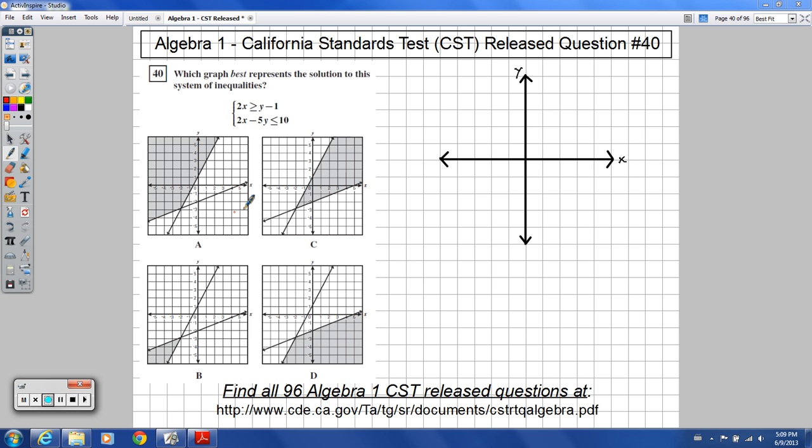And like magic, there's my graph. Okay, so over here on this left side, I'm going to do this inequality over here. So 2x greater than or equal to y minus 1.